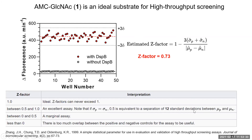Having demonstrated that AMC GlcNAc is sensitive enough, we then assessed the quality of high-throughput screening using the Z' factor, which is a measure based on the standard deviation over the means between positive and control samples. The Z' factor we obtained is 0.773, which falls into the excellent category, meaning the assay can well distinguish between positive samples and controls.